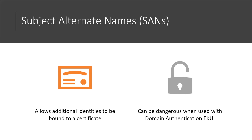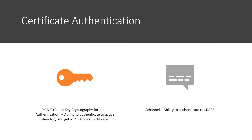Another important concept is the Subject Alternative Name, which allows additional entities or user accounts to be bound to a certificate. It can be pretty dangerous when used with a domain authentication EKU. There are a couple of ways to authenticate once you get a certificate: one is Kerberos-based authentication via PKINIT, where you authenticate and get a TGT. If Kerberos is not available, you can also authenticate via LDAPS.